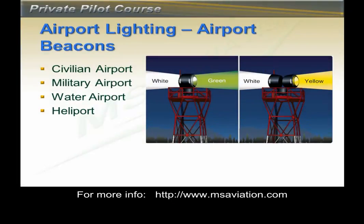Now let's spend a few minutes talking about airport lighting. Most, but not all, airports will have beacons switched on at night or during bad weather to help us find the airport. Civilian beacons will flash green then white, alternating again and again. Military airport beacons will flash green then two quick white flashes. Military airfields are only for emergency use or if you have permission to land there.